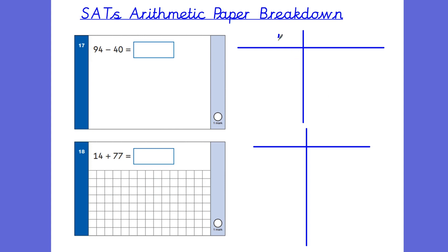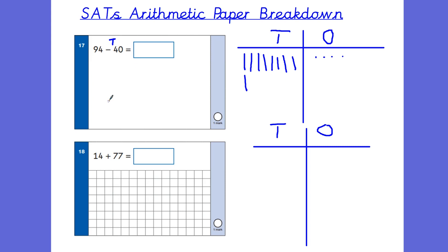Questions 17 and 18 also require place value charts. For 94 minus 40: make 94 — nine 10s and four 1s. We're taking away only tens this time — no ones to take away. Cross out four tens. You could also do this by counting back four times in tens from 94, which gives 54. From the chart we have five tens (50) and still four ones, leaving a final answer of 54.